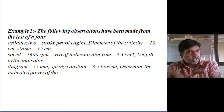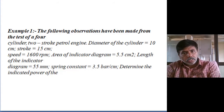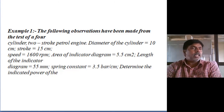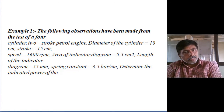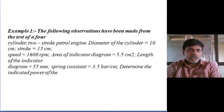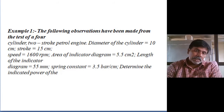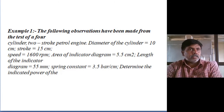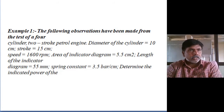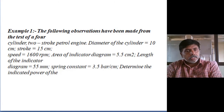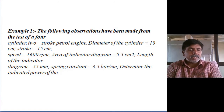Diameter of the cylinder is 10 cm — convert to meters. From that you can determine the area as pi by 4 D-squared. Stroke length is 15 cm — convert to meters. Diameter into stroke length gives the stroke volume. Speed is 1600 RPM.